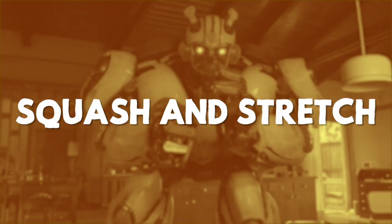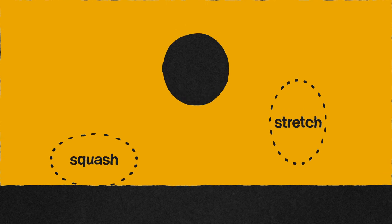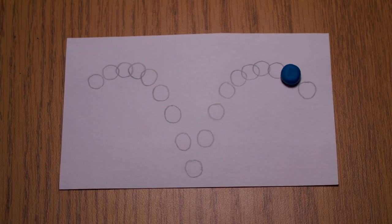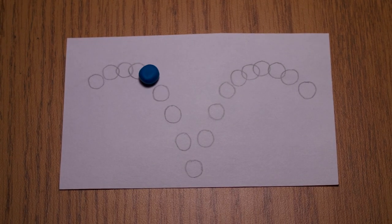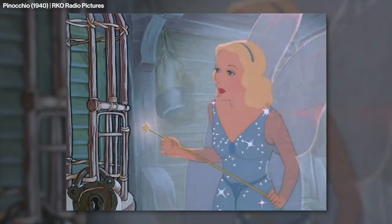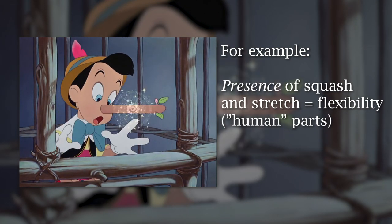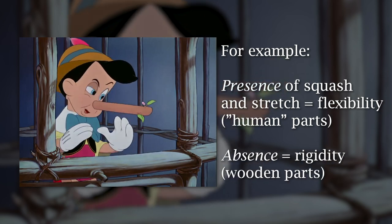First, there's squash and stretch. The easiest way to look at it is with a bouncing ball: when it starts to fall, it speeds up and stretches to show that speed; it eventually hits the ground and squashes; then the ball stretches out again as it bounces back up. If you remove the squash and stretch, it visibly seems more solid, like a golf ball. A lack of squash and stretch conveys rigidity, while a lot of squash and stretch conveys flexibility.